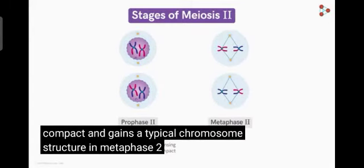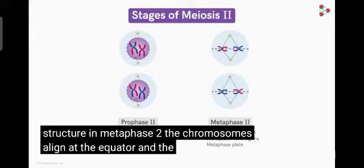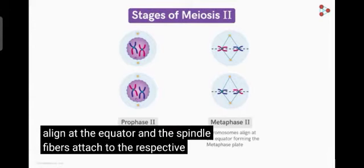In metaphase II, the chromosomes align at the equator and the spindle fibres attach to the respective sister chromatids.